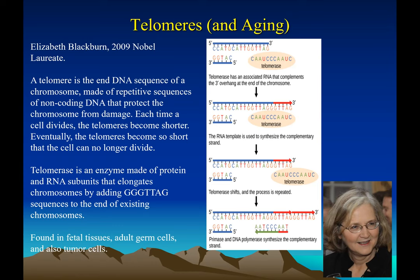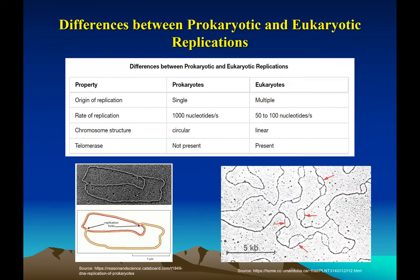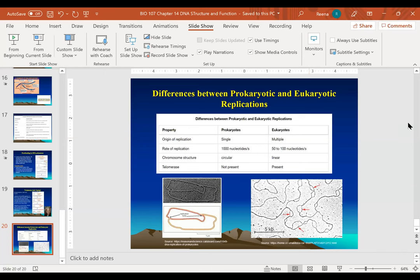When DNA replication happens in prokaryotes, an electron microscopy picture shows what is called the origin of replication — visible as a bubble — and replication is very fast in prokaryotes. Comparing prokaryotes and eukaryotes: prokaryotes have a single origin of replication, eukaryotes have multiple; prokaryotic genomes are small and replicate fast; the prokaryotic chromosome is circular, while eukaryotes have linear chromosomes; telomerase is present in eukaryotes but absent in prokaryotes. These are the most important points in this chapter.